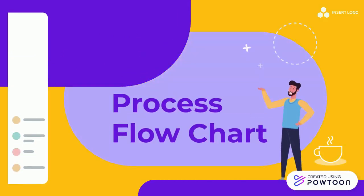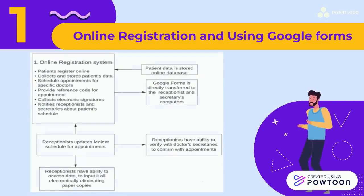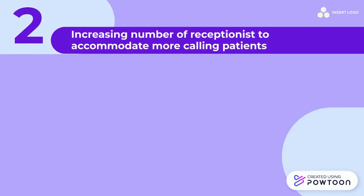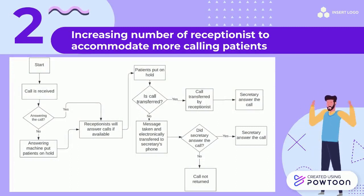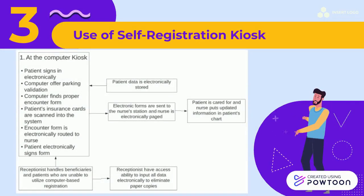We have also included process flowcharts for ACA to aid visualization of how they are to improve the clinic's performance. Here is a revised flowchart integrating our ACA-1 of using Facebook, Google Forms, and Google Calendar into the clinic's administrative process. Here as well is a revised flowchart of how the existing process can be improved by integrating additional telephone interceptions. And the last revised process flowchart captures how the clinic's system will function upon integrating a self-registration task into the administrative process.